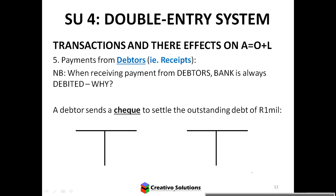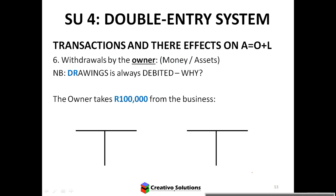Fifth scenario: receiving payment from a debtor. Bank will increase because you're getting money from a debtor. The debtor is paying you, so the debtor will decrease. Debtors is an asset, so a decrease is on the credit side. Next: drawings. Bank is credited and drawings is debited — drawings is going up.